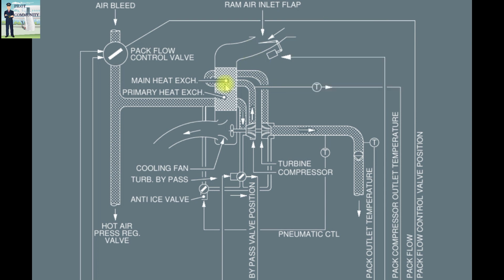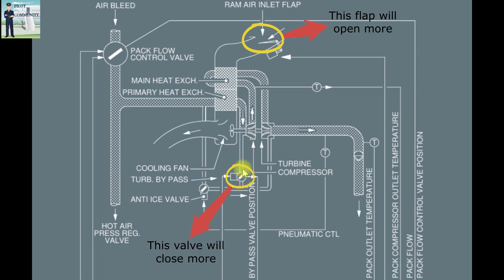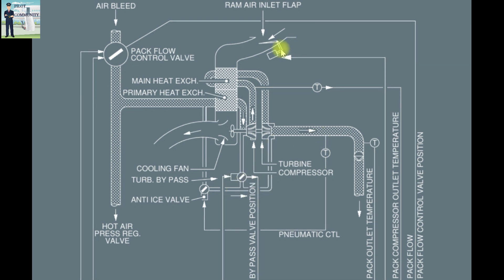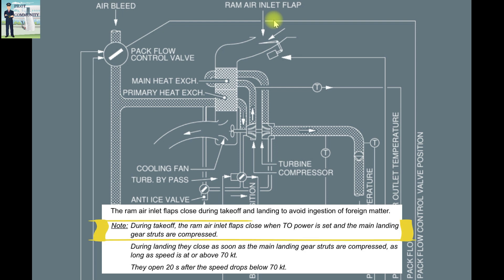When the pilot sets a low temperature, we want cold air, so the setting will increase the ram air inlet flap opening and close the turbine bypass valve. At the turbine bypass valve, a part of the hot bleed air enters the compressor and a part passes through the turbine bypass valve, then meets the airflow again at the turbine discharge. At turbine discharge we have cool air. For a low temperature setting, we don't want hot air mixed with this cool air, so the turbine bypass valve is closed. When the temperature setting is high, this valve will open more so that hot air is mixed.